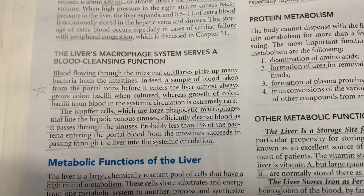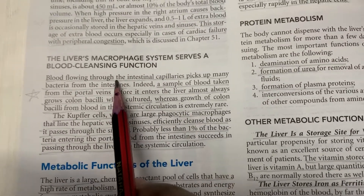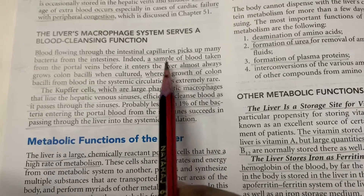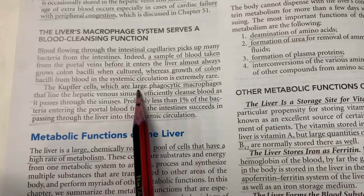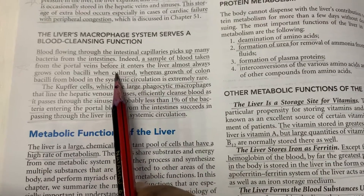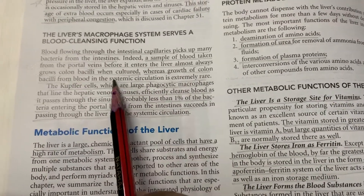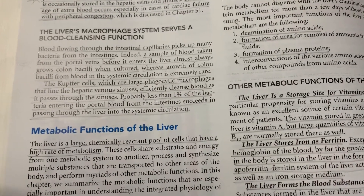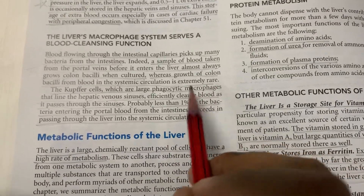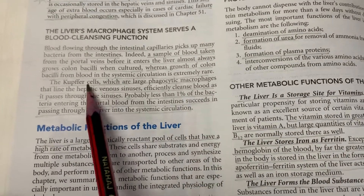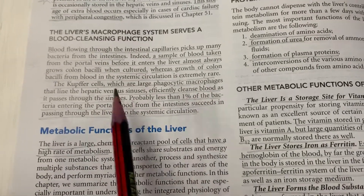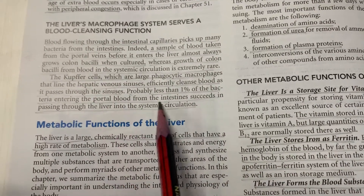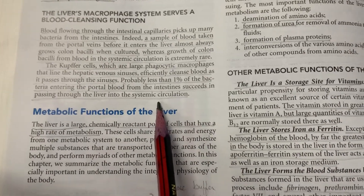The liver also has a blood cleansing function, especially via its macrophage system. Blood flowing through the intestinal capillaries picks up many bacteria from the intestines. A sample of blood taken from the portal veins before it enters the liver almost always grows colon bacilli when cultured, whereas growth of colon bacilli from blood in the systemic circulation after cleansing by the liver's macrophage system is extremely rare. The Kupffer cells are large phagocytic macrophages that efficiently cleanse blood as it passes through the sinuses. Probably less than 1% of bacteria entering the portal blood from the intestine succeeds in passing through the liver into the systemic circulation.